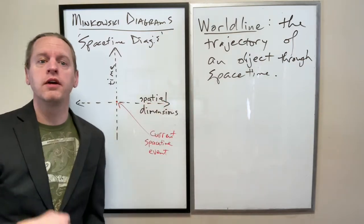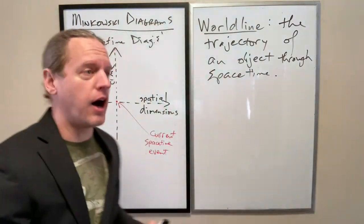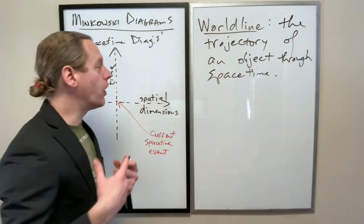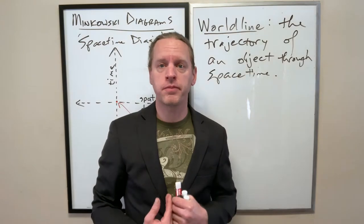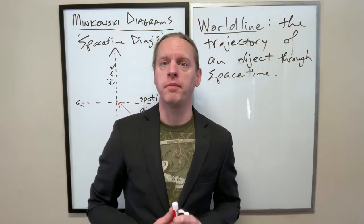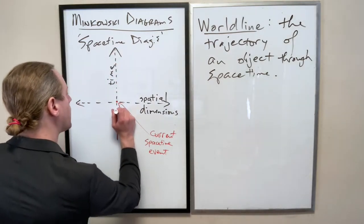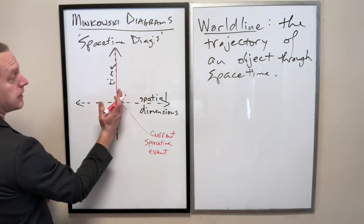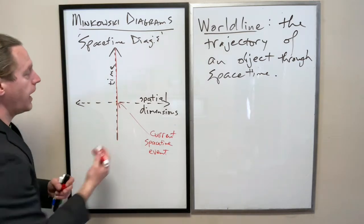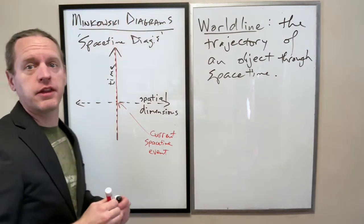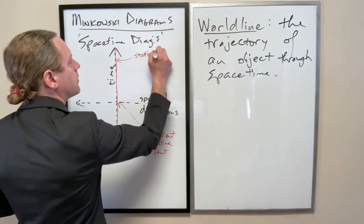The horizontal axis corresponds with three physical dimensions. We can trace some basic examples of world lines. If we consider the world line of an object that is at rest — it remains at its origin for all time — that's a really simple world line. It's at X equals Y equals Z equals zero, so the spatial component is zero at all times, and as time goes forwards it just remains at the origin. This is a stationary world line.